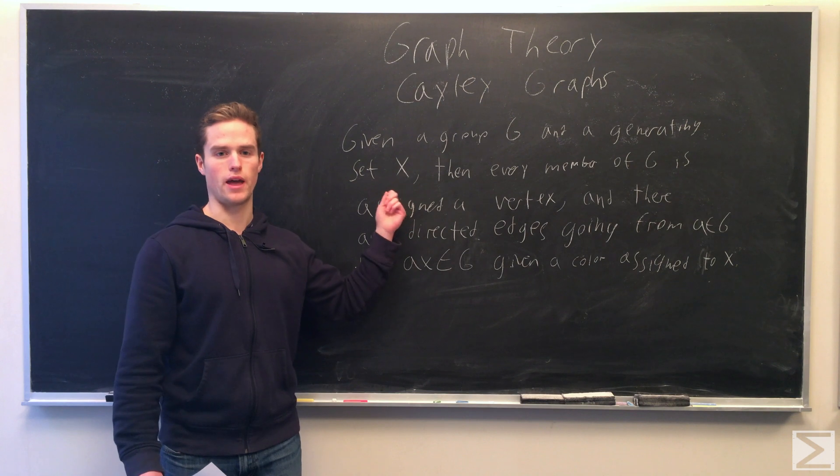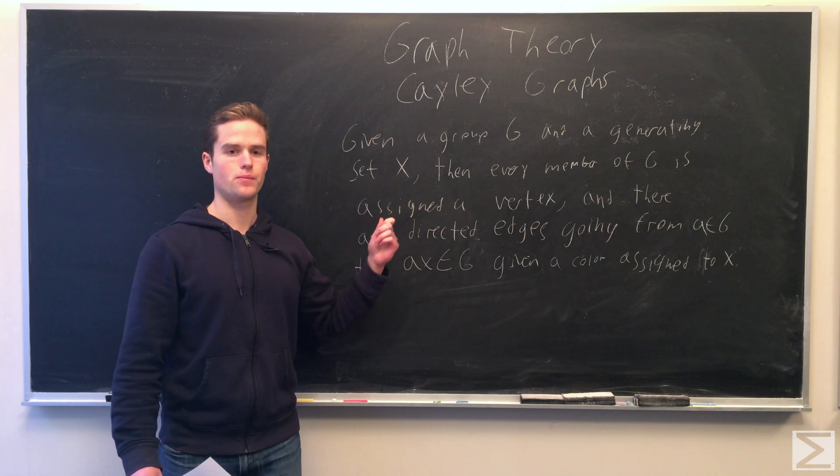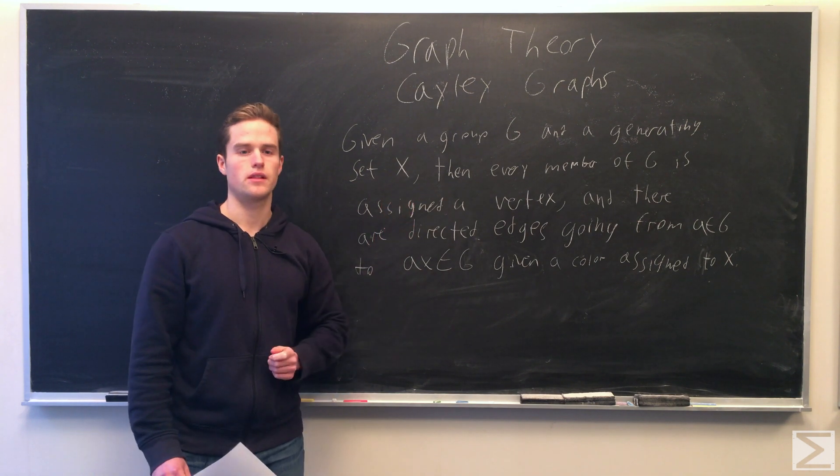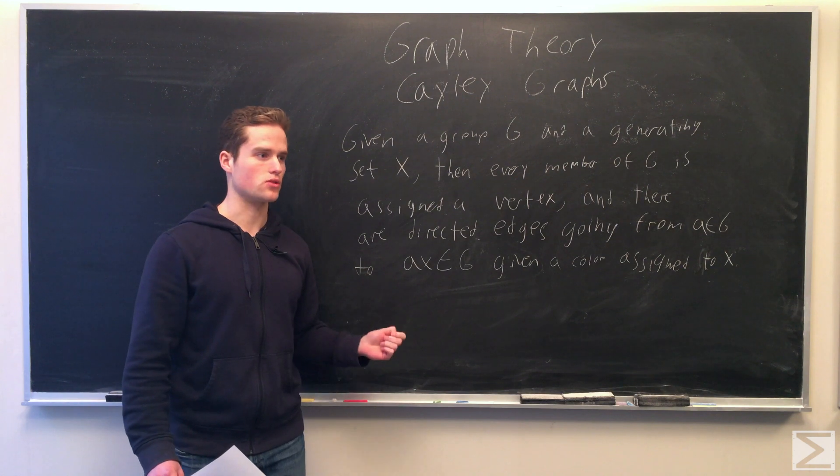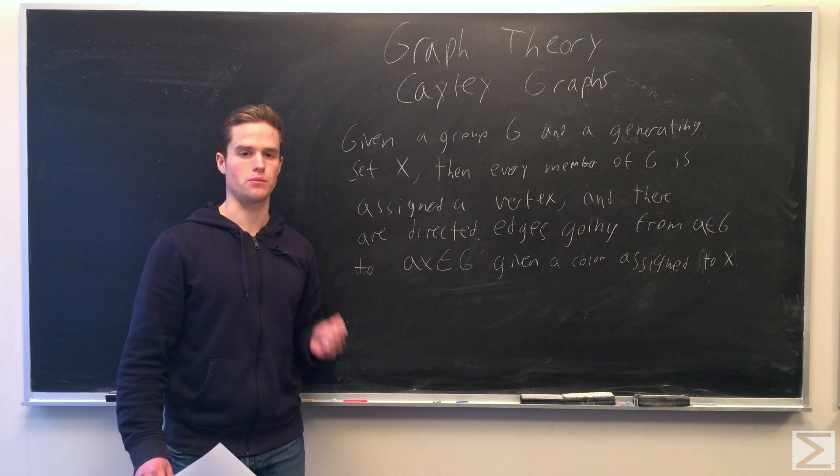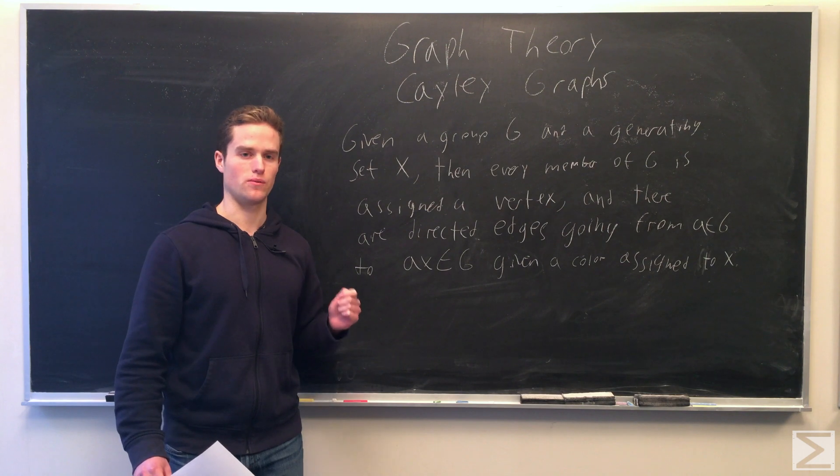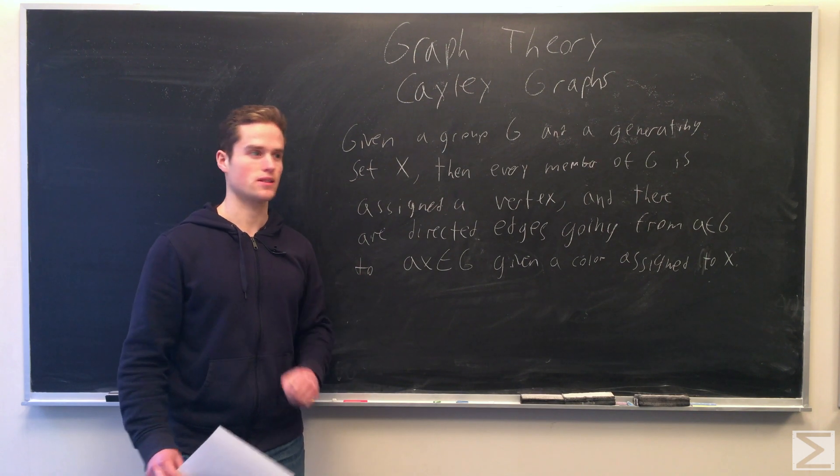So for two elements A, B in G, A has an edge going from A to AX, B has an edge going from B to BX. These are both given the same color and they both go A to AX, B to BX.